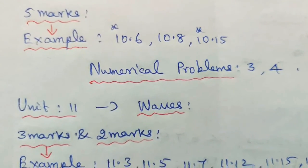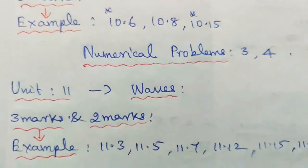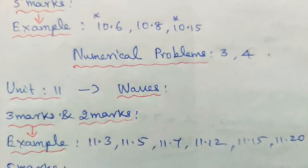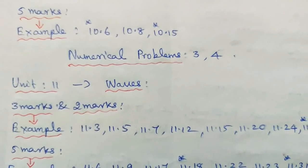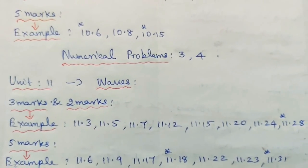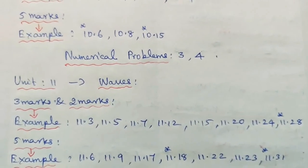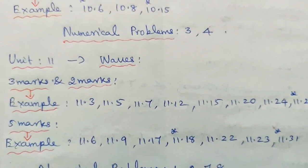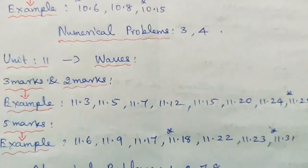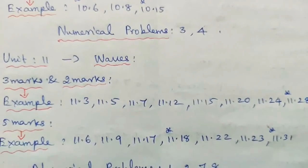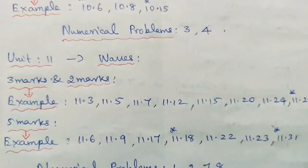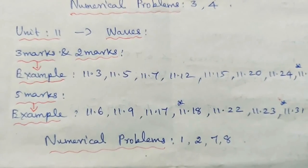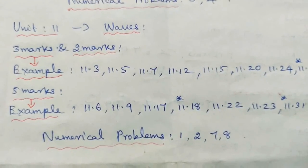Unit 11: Waves — 2 marks and 3 marks. Example problems: 11.3, 11.5, 11.7, 11.2, 11.15, 11.20, 11.24, and 11.28. 5 marks problems: 11.6, 11.9, 11.17, 11.18, 11.22, 11.23, and 11.31. Numerical problems: 1, 2, 7, and 8.